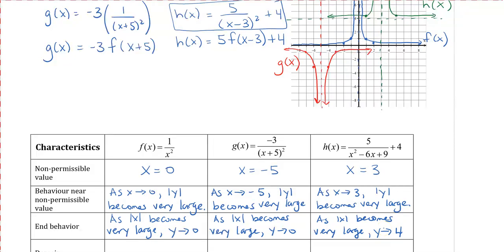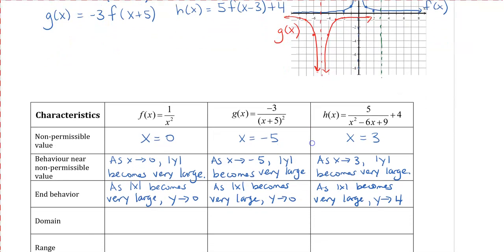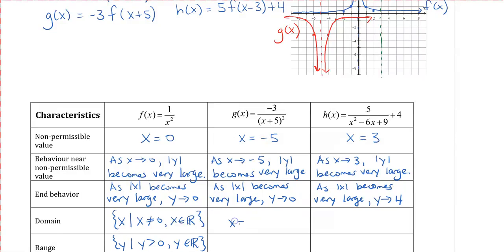For domain and range: the blue graph's domain is all real numbers such that x ≠ 0. Its range is y > 0, since the graph only exists above the x-axis. For the red graph, the domain is all real numbers such that x ≠ −5. The range, because the graph is upside down, is y < 0 — all real numbers below 0.